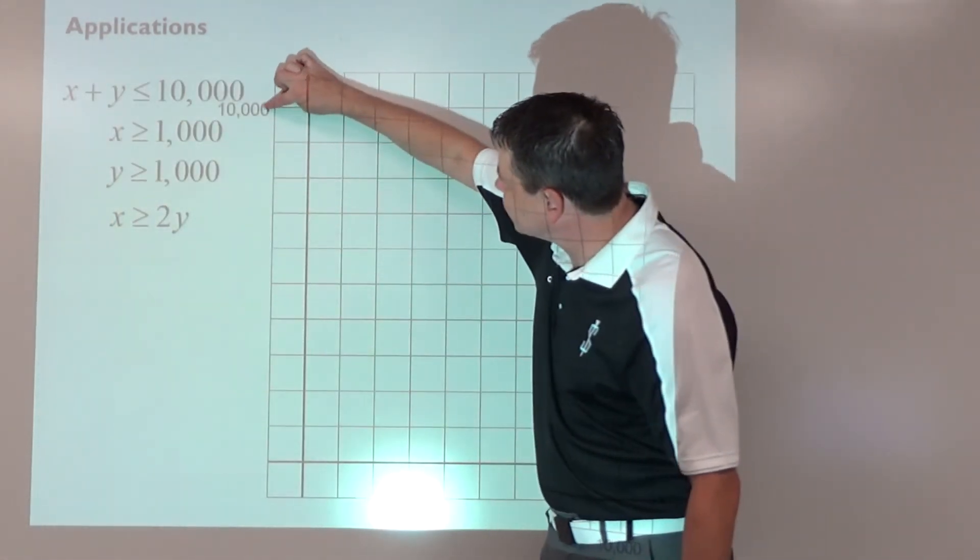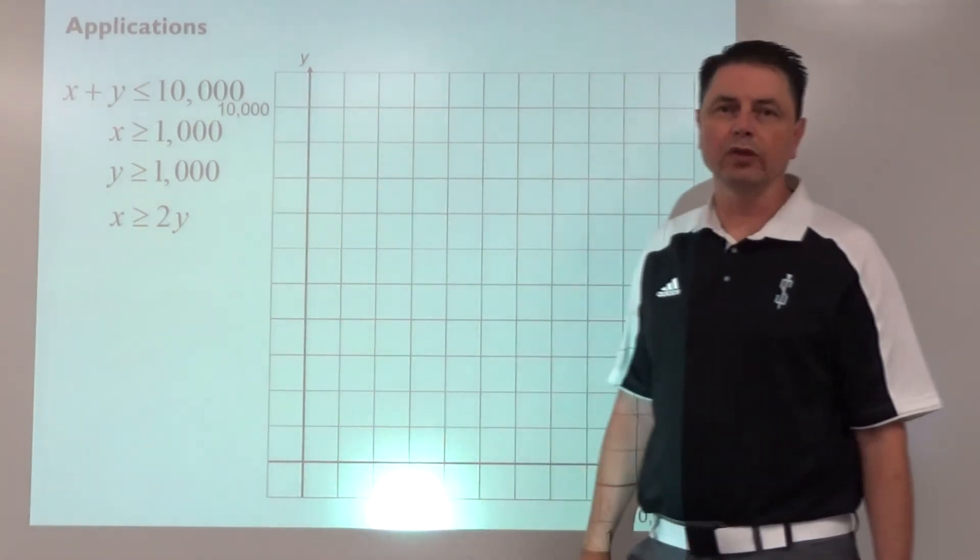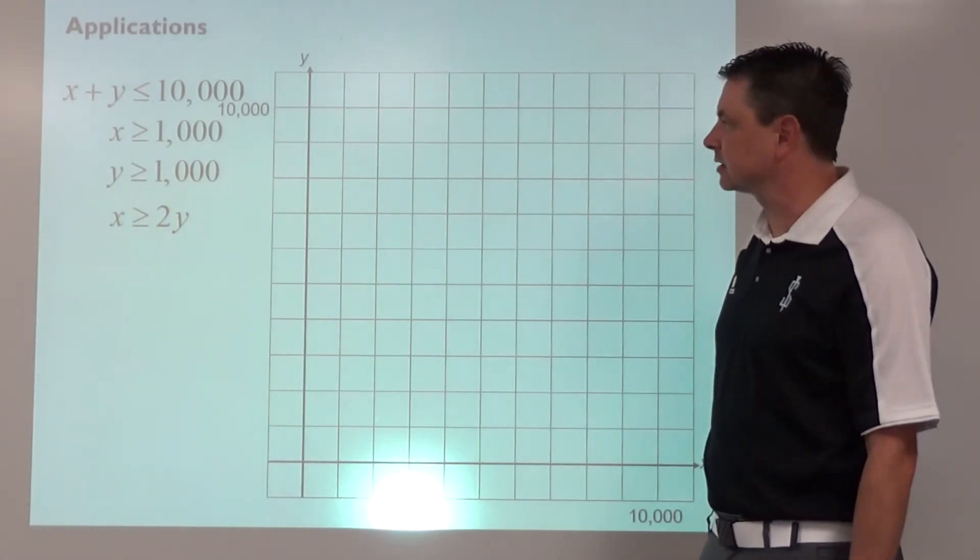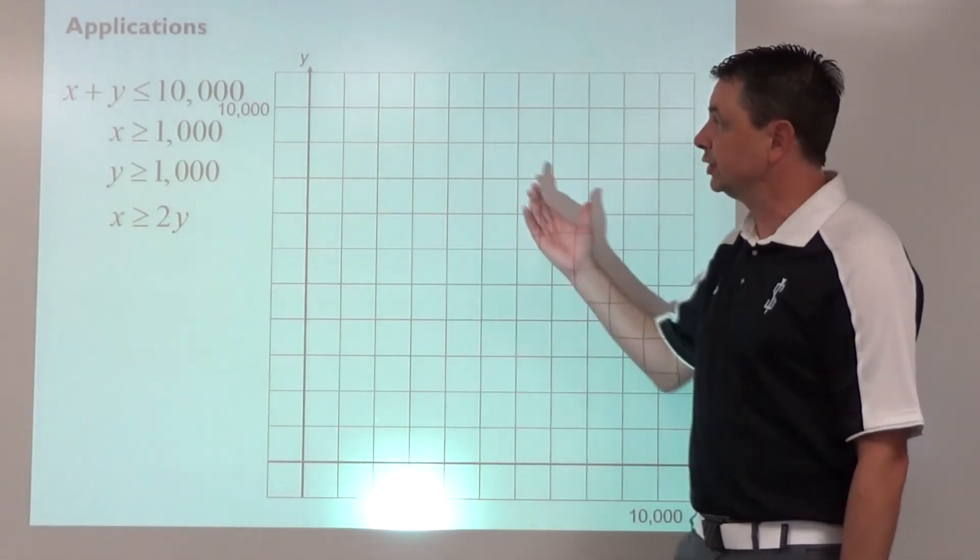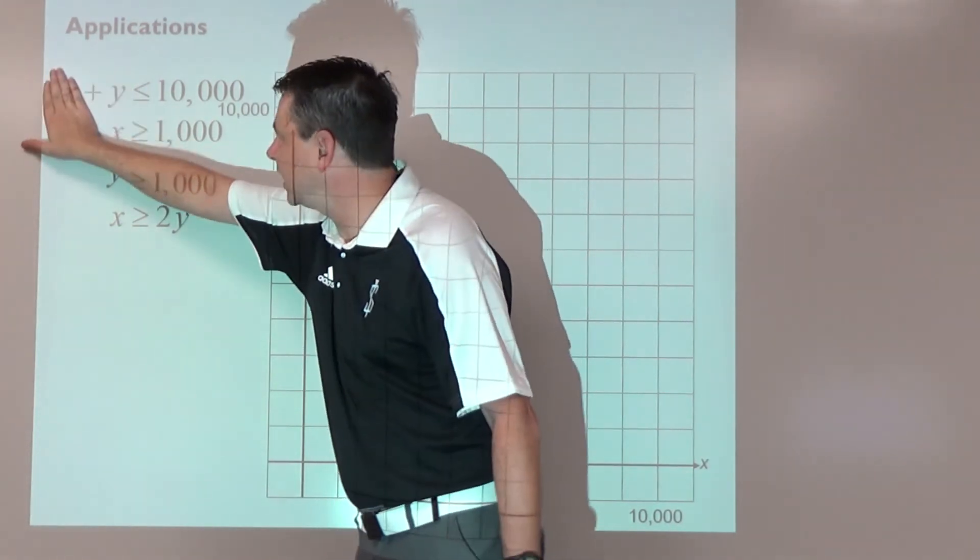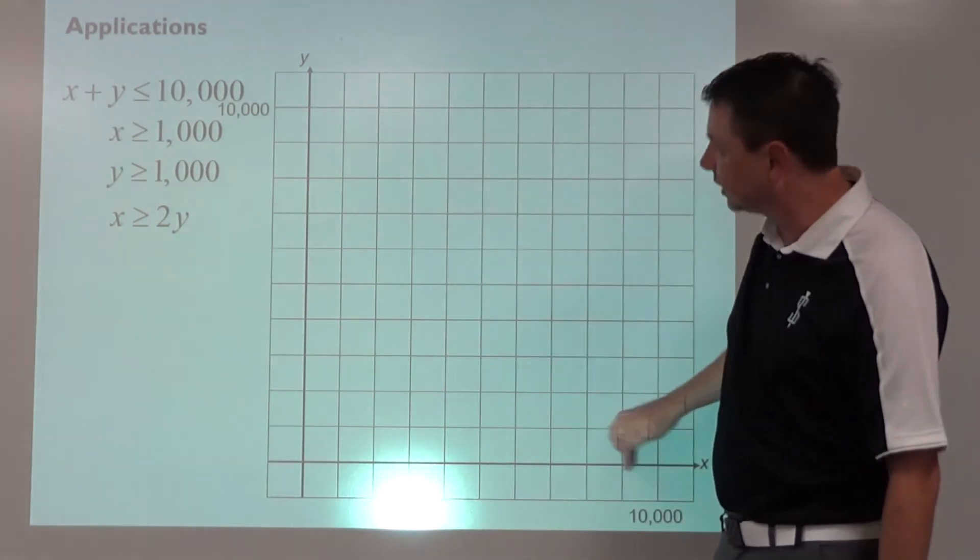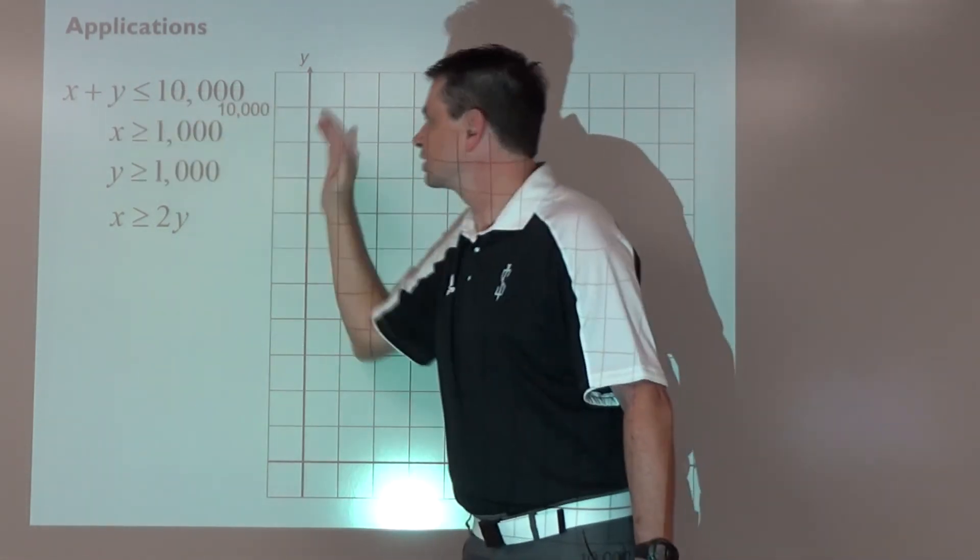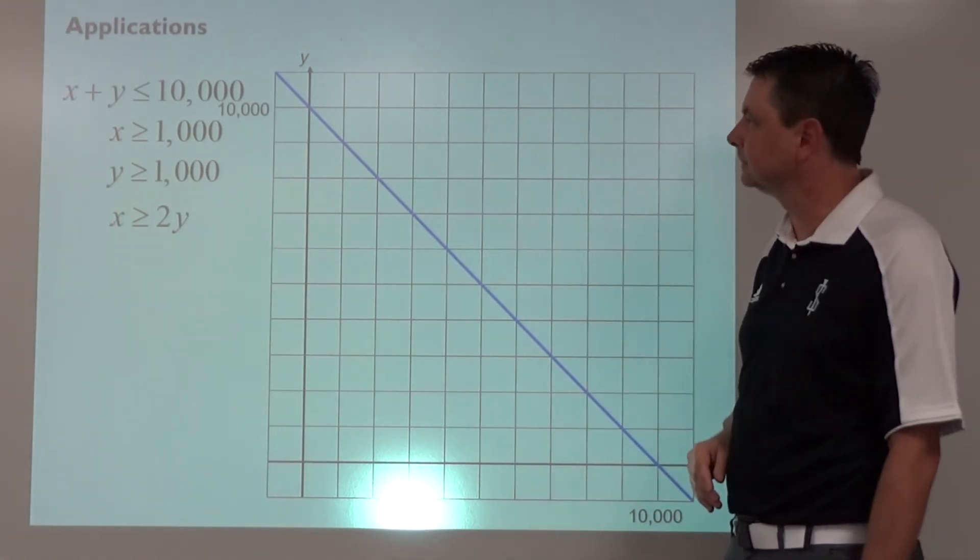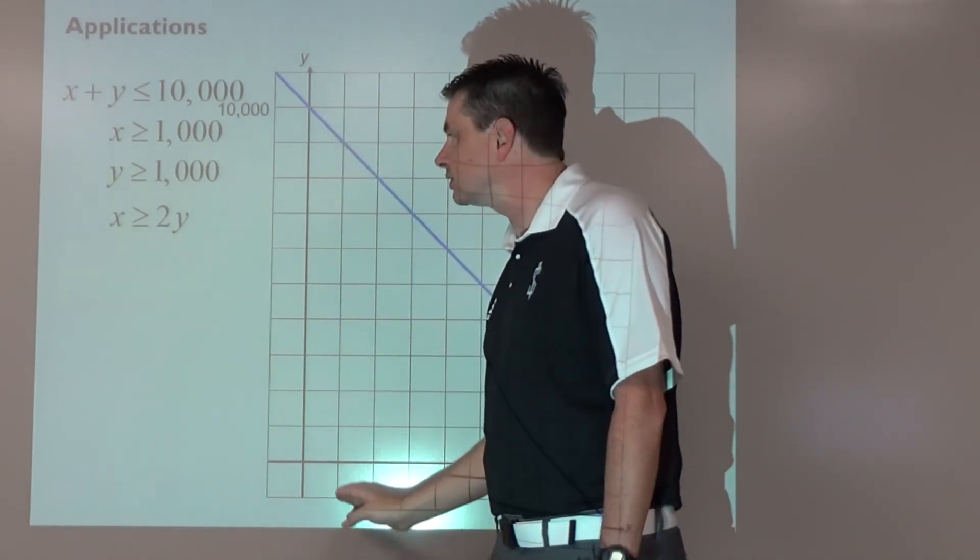So notice here that this is $10,000, so each of these boxes is going to be worth $1,000 and it is labeled on the x-axis the same. So if we do the cover-up, x equals about $10,000, y equals $10,000, so x-intercept, y-intercept. Less than or equal is going to be shade inside.